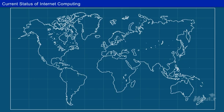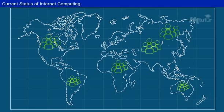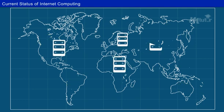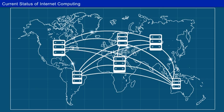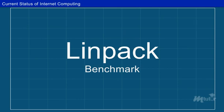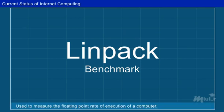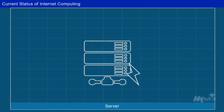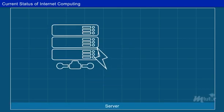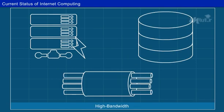Billions of people use the Internet in day-to-day life. As a result, supercomputer sites and large data centers started providing high-performance computing services concurrently to a huge number of Internet users. Because of this huge demand, the LINPACK benchmark, which is used to measure the floating-point rate of execution for high-performance computing, became no longer optimal for measuring system performance. The emergence of computing clouds demanded HTC, that is, high-throughput computing, built with parallel and distributed computing technologies. Data centers are upgraded using fast servers, storage systems and high-bandwidth networks to advance network-based computing and web services.